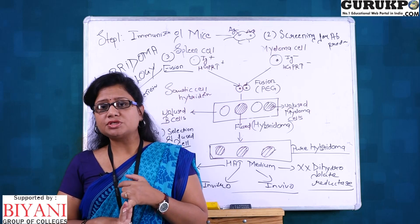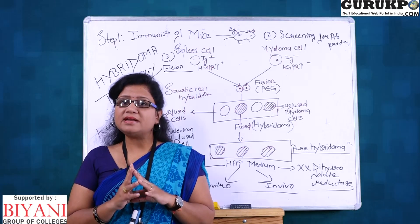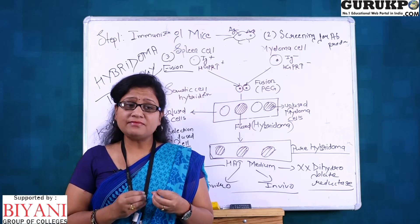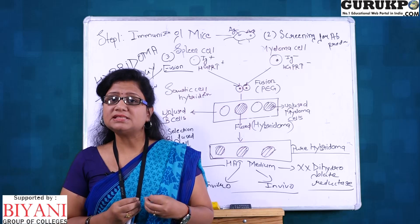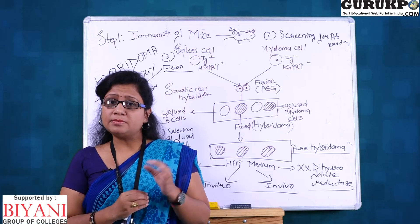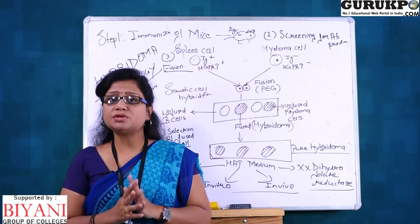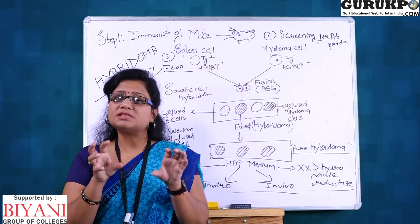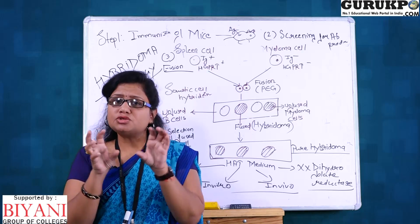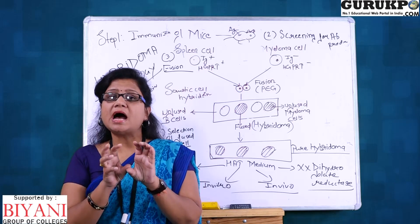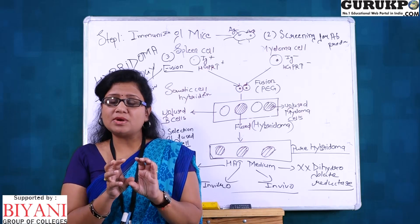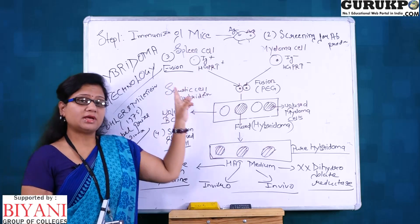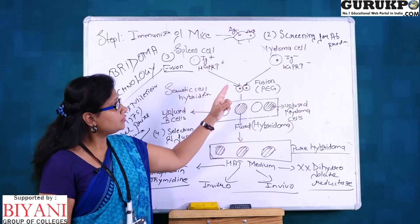When the antibody level is high, you remove the spleen from the mice, and B cells are isolated. B cells have a definite lifespan — they can die, and we cannot utilize B cells for continuous culture in animal tissue culture technology for long-term antibody production. So we take another cell known as the myeloma cell. When these two cells fuse, they form a hybrid known as hybridoma.